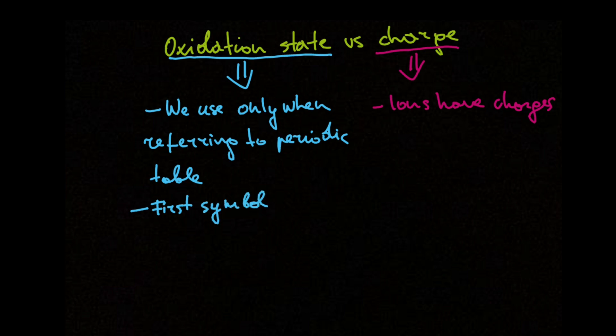Another and also most notable difference between these two terms is that when we are talking about oxidation state, first we use the symbol and then the sign. And for a charge, we use sign and then a symbol.